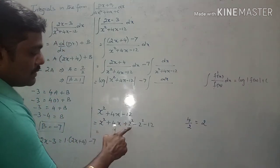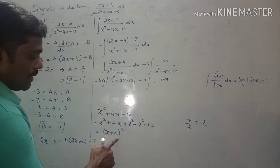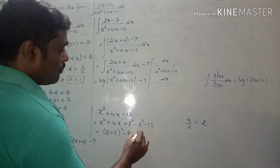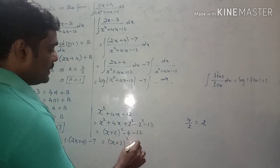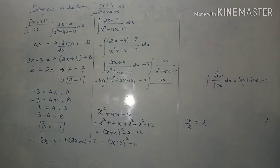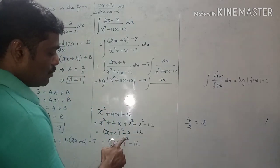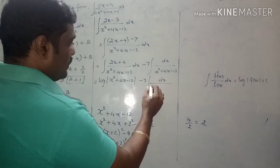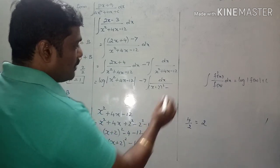Now x² + 4x is of the form a² + 2ab + b², which equals (a + b)². So x² + 4x + 4 = (x + 2)². We subtract 4 and also have minus 12, giving minus 4 minus 12 = minus 16. Therefore the denominator x² + 4x minus 12 can be written as (x + 2)² minus 16, which is (x + 2)² minus 4².